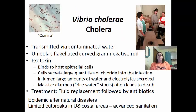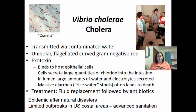Vibrio cholerae causes cholera. The name 'vibrio' tells you it has a comma-type shape — a unipolar flagellated curved gram-negative rod. Transmission is via contaminated water. It produces an exotoxin that binds to host epithelial cells, causing the cells to secrete large quantities of chloride into the intestines. Large amounts of water and electrolytes then flood the lumen, causing massive diarrhea — known as rice water stool — which can lead to death. Treatment is fluid replacement followed by antibiotics. Patients can lose up to three to five gallons of fluid per day.